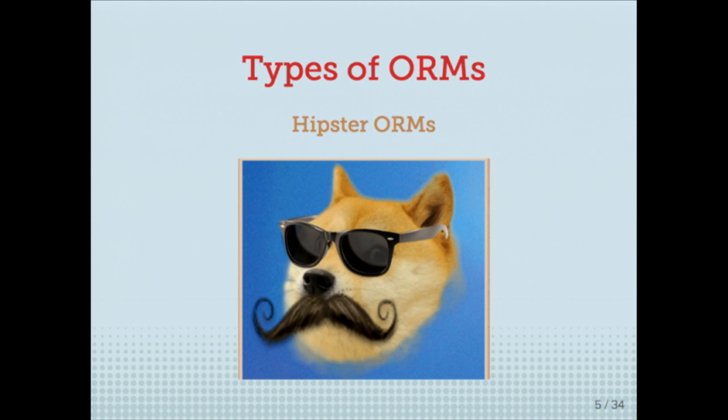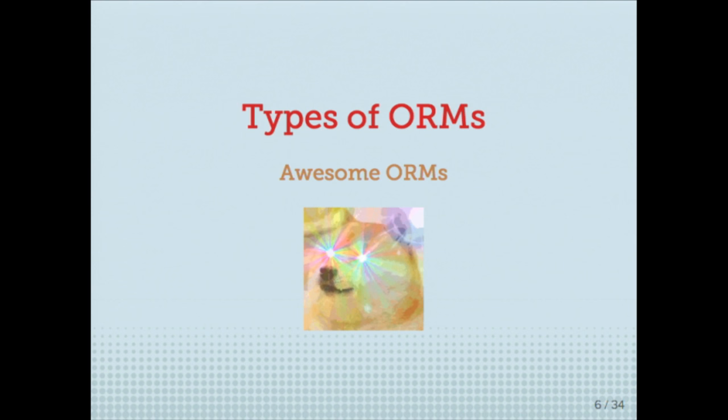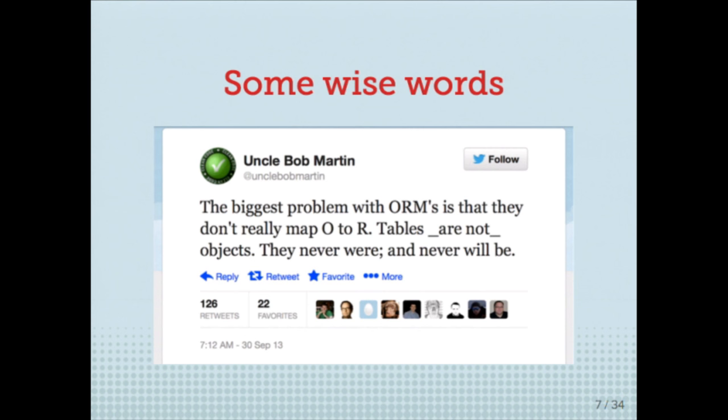And there's, of course, the last type: the awesome ORMs. I am, of course, completely unbiased about what is an awesome ORM. Dutrin is awesome, but for me it's a hipster ORM — it's so hipster I don't want to use it. There are also wise words said by Uncle Bob Martin: the biggest problem with ORMs is that they don't really map O to R. Tables are not objects — they never were and never will be.